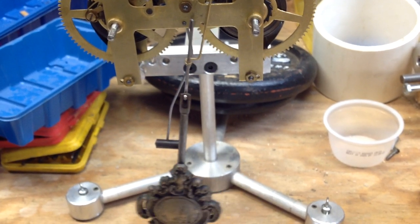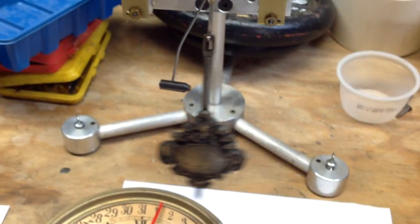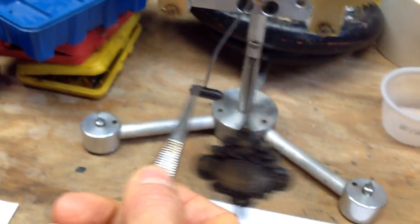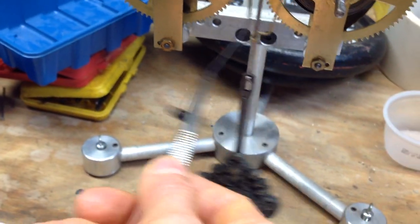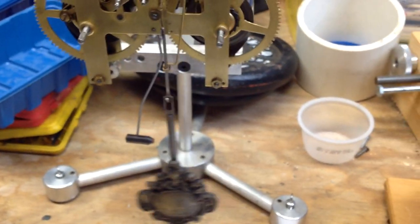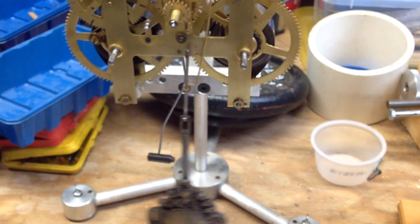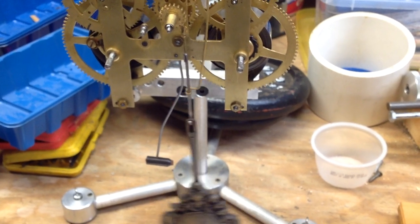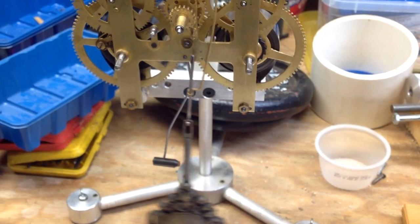The hammer arbor also has a helper spring on it so that when you push that up, the helper spring causes the hammer to fall back down onto the gong with some force.